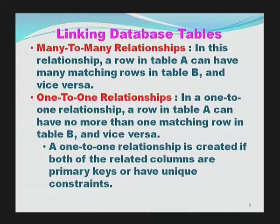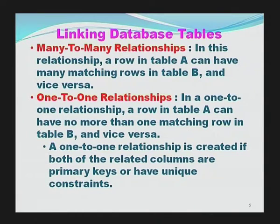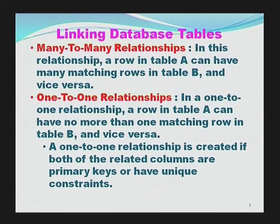The second is the many-to-many relationship. As the name indicates, in this case both tables will have one or more matching rows with reference to one row in another. The third is the one-to-one relationship, where a row in table A can have no more than one matching row in table B and vice versa. A one-to-one relationship is created if both related columns are primary keys or have unique constraints.